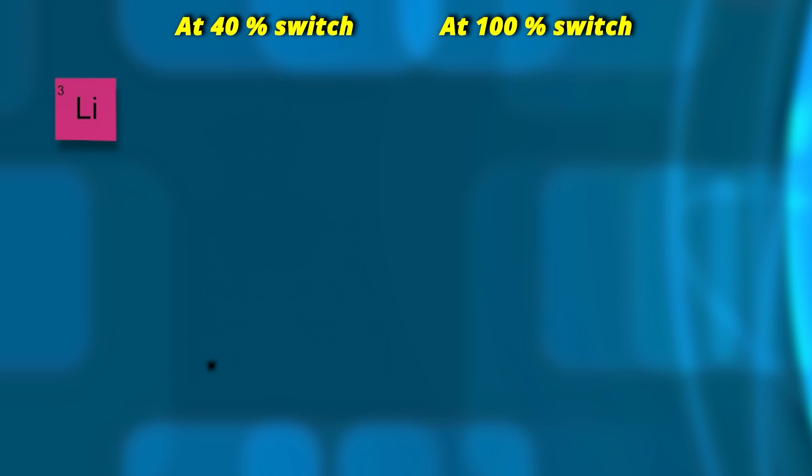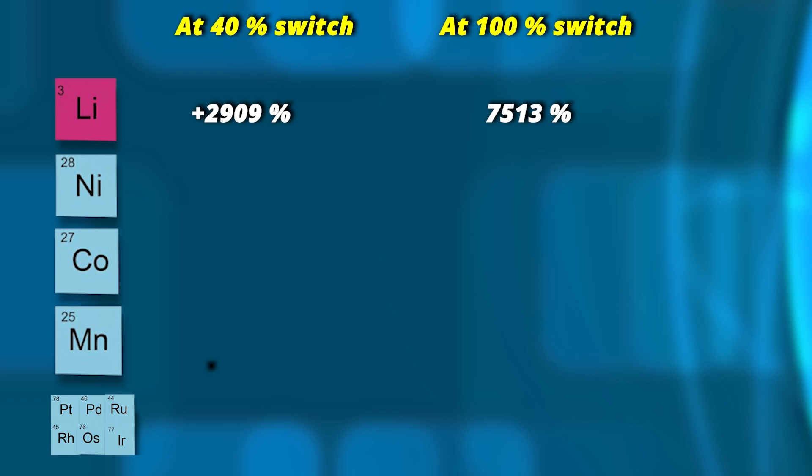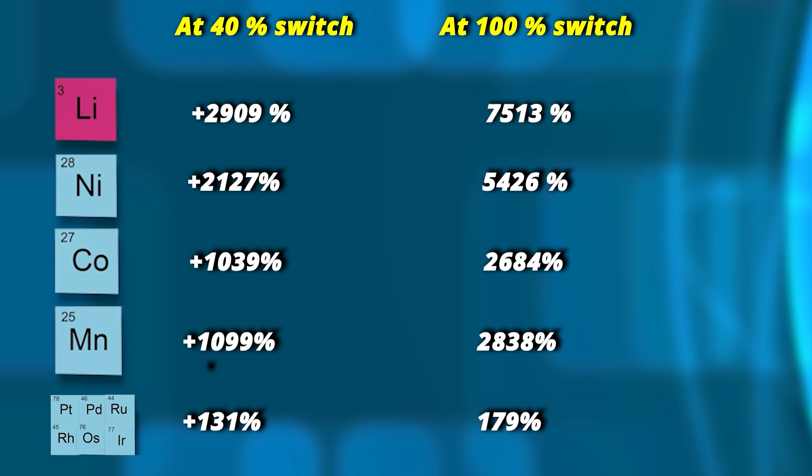That includes lithium, nickel, cobalt, manganese, and the six platinum group metals. As the climate crisis pushes countries to ditch combustion engines, the demand for these metals will skyrocket. Take lithium. The researchers estimate that the need for that metal will rise more than 2,900 percent if 40 percent of the vehicles on the road in those countries is electrical by 2050. If all vehicles are electrical, then the rise is more than 7,000 percent. It's similar for each of the other metals. The numbers are staggering.